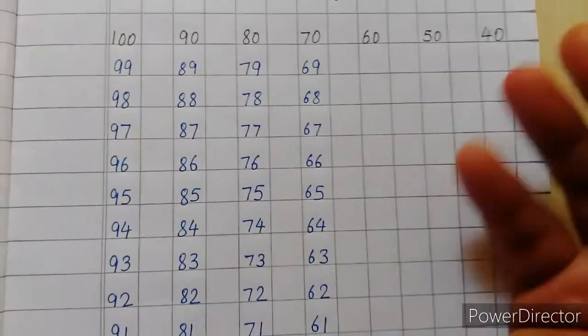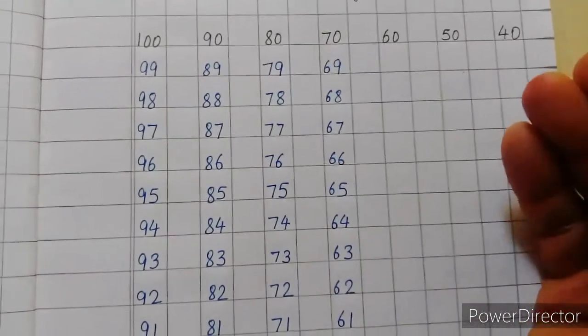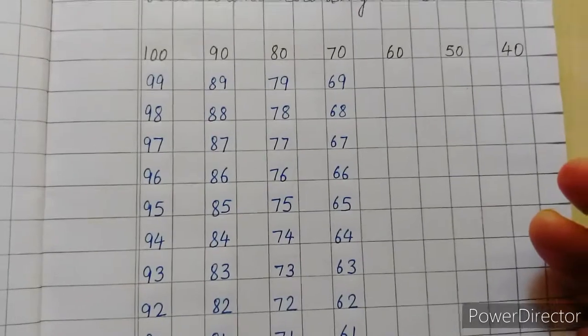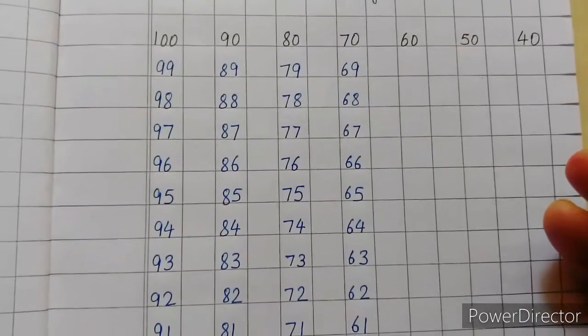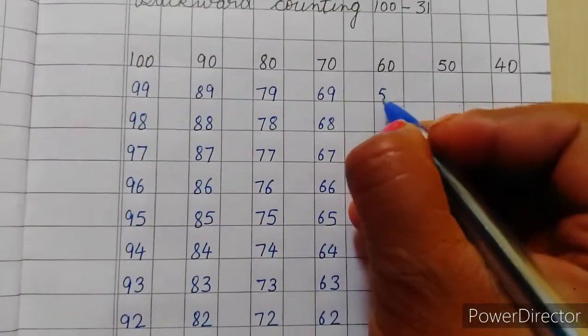Abhi yahan par kaun si line aayegi? 1, 2, 3, 4, 5, 6. 6 se pehle kya hai? 5. Because these are backward counting. Yah reverse counting hai, ulti counting hai. To 6 se pehle kya aata hai? 5. To yahan par kya aayega?